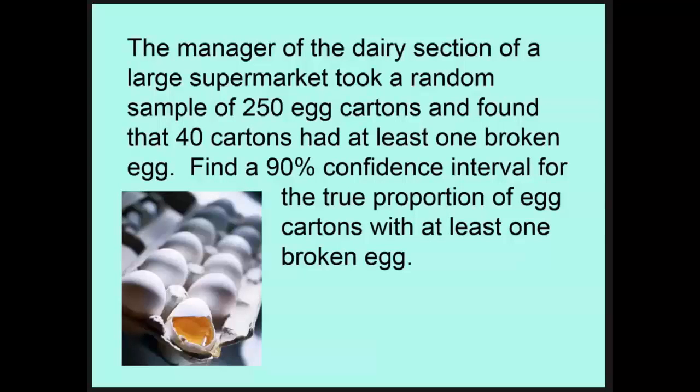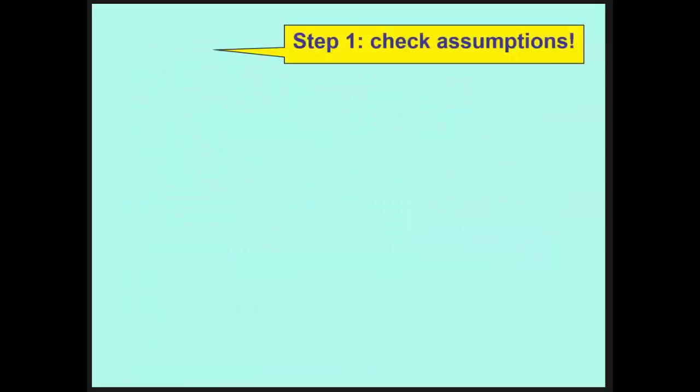Create a 90% confidence interval for the true proportion of egg cartons with at least one broken egg. So what percent, given that sample data, what percent of the time when I go grocery shopping would I expect to see something with a broken egg in it? First step, check assumptions.